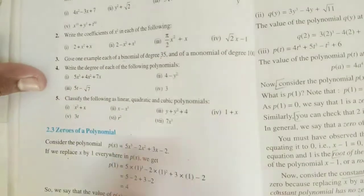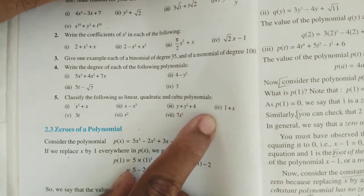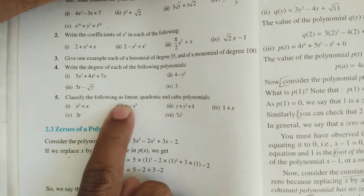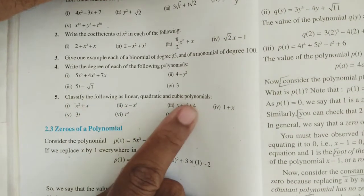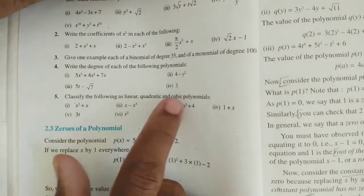What they have given in this problem: classify the following as linear, quadratic and cubic polynomial. Here, they have given a few polynomials. Now we can classify this polynomial as linear, quadratic and cubic.